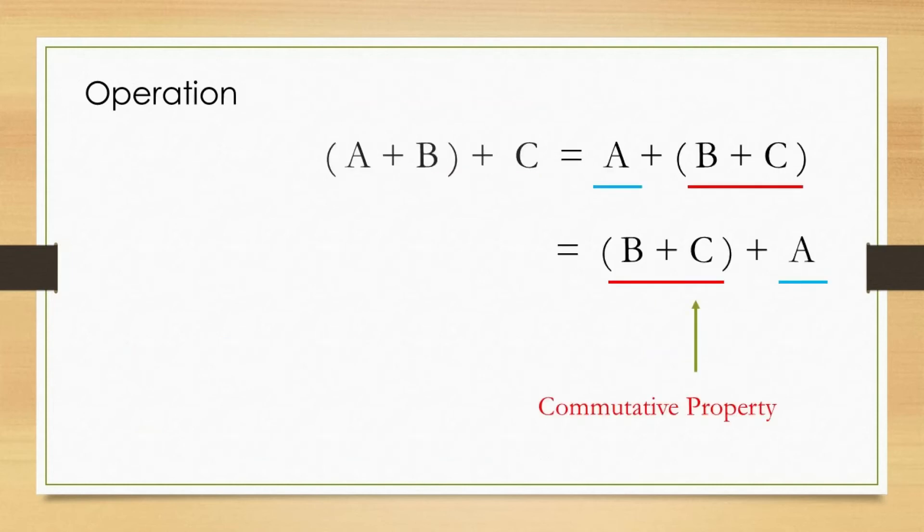The addition of B and C can be expressed as B plus C plus A. This is possible due to the commutative property of the addition.